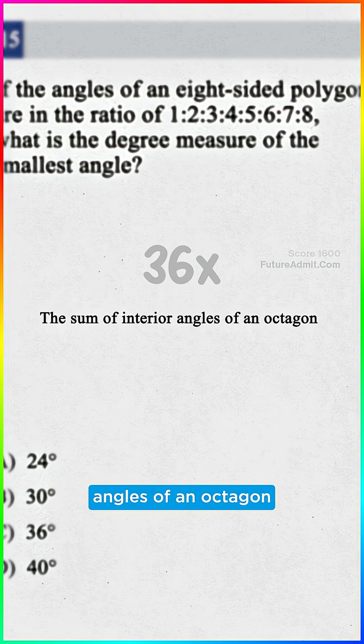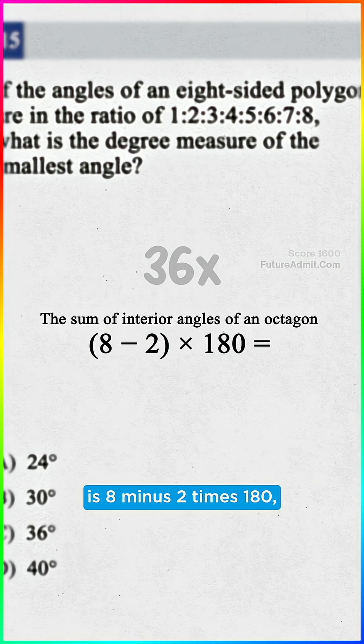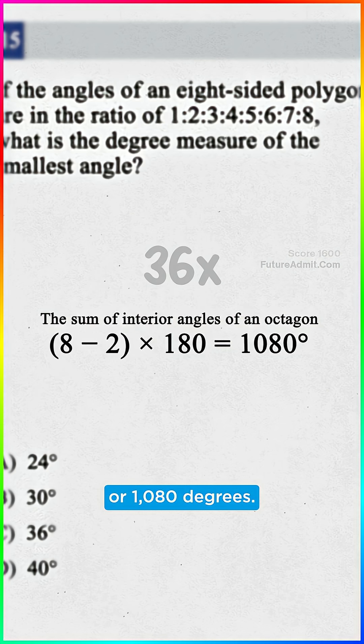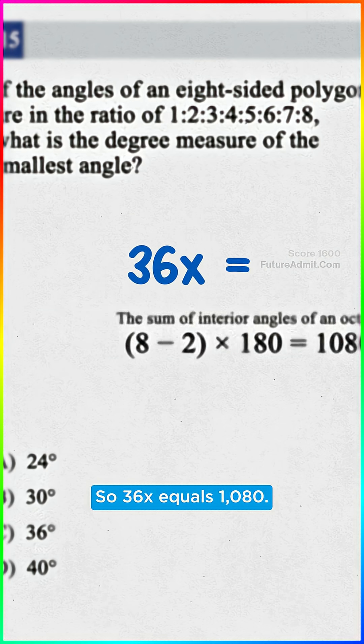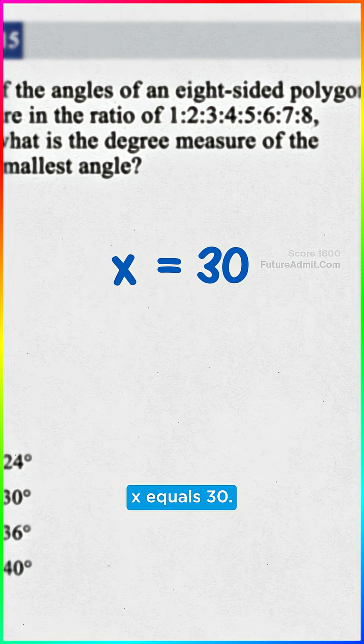The sum of interior angles of an octagon is eight minus two times 180 or 1,080 degrees. So 36 X equals 1,080. Divide by 36, X equals 30.